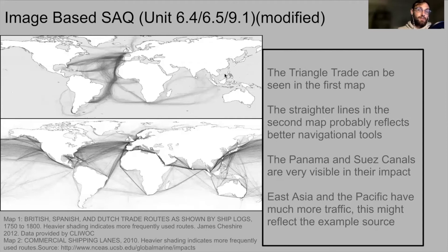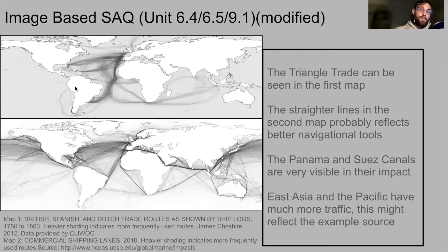That didn't mean trade didn't happen, but keep in mind that the first map is only showing European ship logs, not necessarily the logs of all the merchants doing business in the region. It's much more clear on the second map that East Asia — Japan, Korea, China, the Philippines, Taiwan, and Southeast Asia — have huge amounts of traffic, reflecting China's rise as an industrial powerhouse and Japan's integration into the world system. Also, the west coast of North America is now fully developed. If you look closely at the first map, you can barely make out the Manila galleons leaving from Acapulco making their way across the Pacific. There's just so much to unpack here.